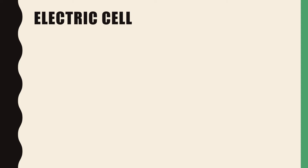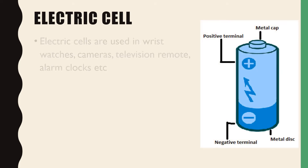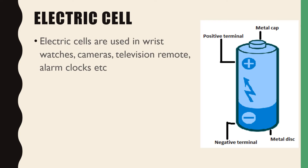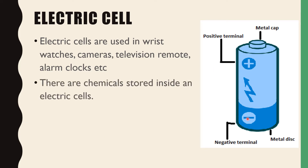Electric cell. The bulb gets electricity from an electric cell. Electric cells are used in wrist watches, cameras, televisions, remotes, alarm clocks, etc. An electric cell has two terminals — a positive terminal and a negative terminal.